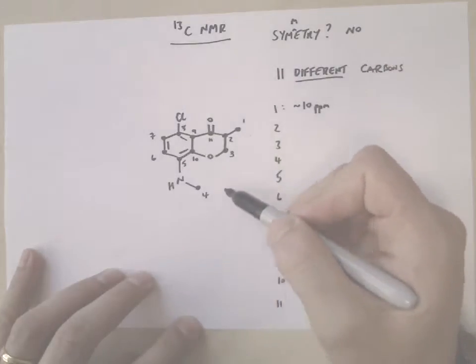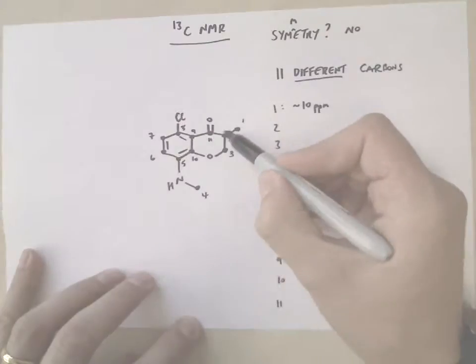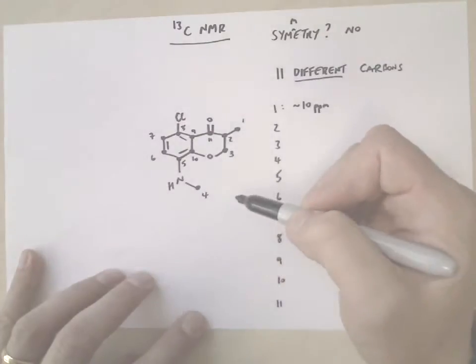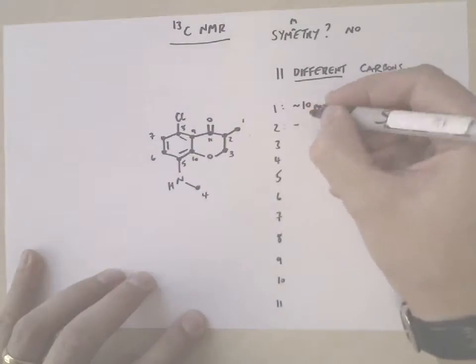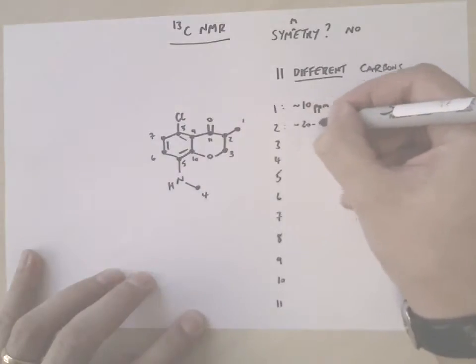Carbon 2 is a CH carbon, but it's attached directly to a carbonyl, so that carbonyl influences where this carbon comes. So it's not quite as low as 10, but it comes up around 20 to 40 ppm.